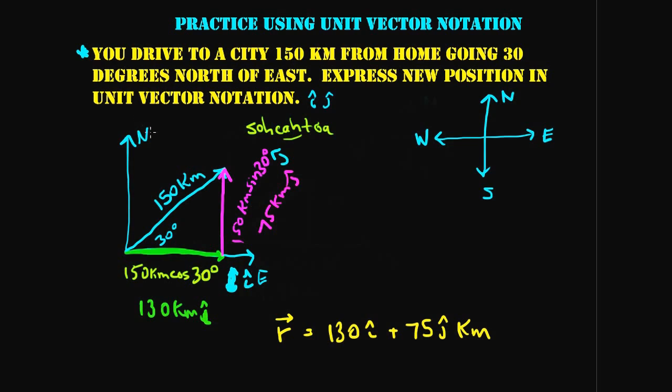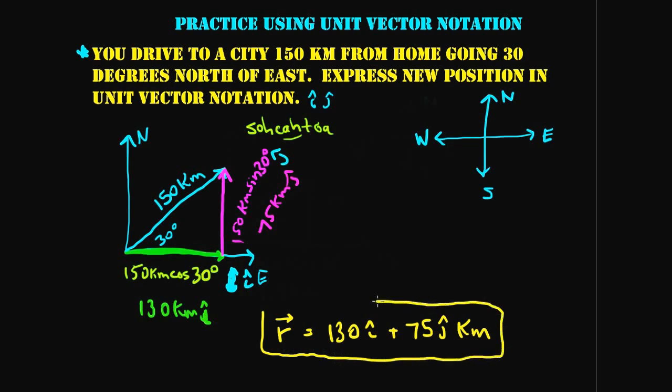Instead of saying I drove to a city 150 kilometers away going 30 degrees north of east, I could just say I traveled 130 kilometers east and 75 kilometers north. In conversation, you'd understand much more clearly where I went if I told you how far I went in each direction, versus saying 150 kilometers at 30 degrees north of east. This allows us to elegantly describe a vector in terms of its components.